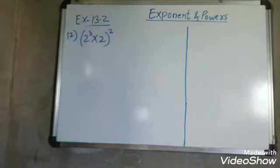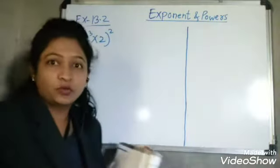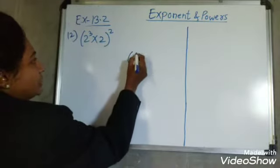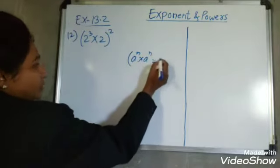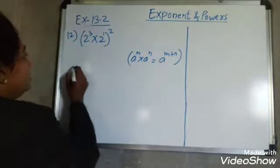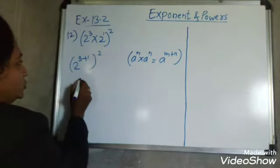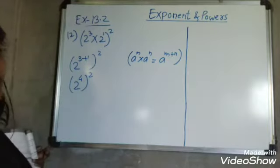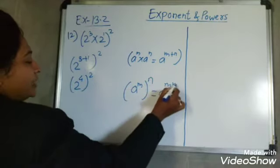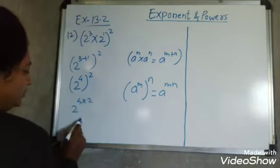Now the 12th example: 2 cube multiplied 2, whole bracket square. Always solve the bracket first. Inside the bracket, bases are same, so we use A raised to M into A raised to N equals A raised to M plus N. Note that 2 alone means exponent 1. So 2 raised to 3 plus 1, which is 2 raised to 4, whole square. Then using A raised to M raised to N equals A raised to MN: 4 multiplied by 2 gives 2 raised to 8.